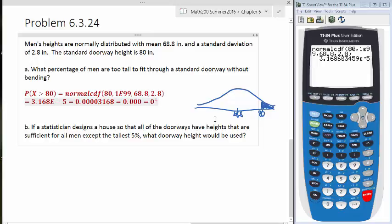We don't want to just say 0. We can say 0.00, which means it's really close to 0 but not exactly 0. Or we can say 0 plus, which means the same thing, but we don't want to put exactly 0. So we have a really small probability of people, of men, who have to duck under our standard doorway.